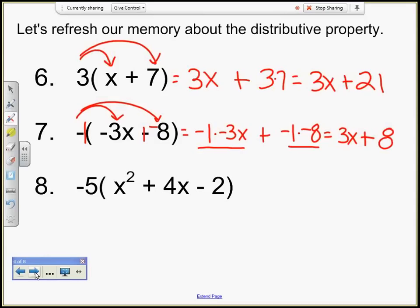Let's try number 8. Negative 5 times x squared. So it's going to be negative 5 times x squared plus negative 5 times 4x, which will be negative 20x. Leave change, change. Negative 5 times negative 2 is positive 10.